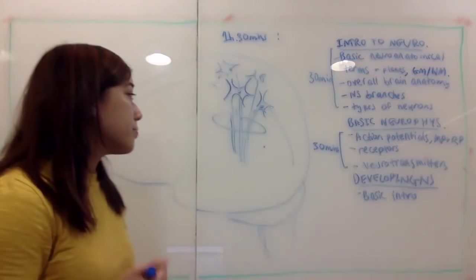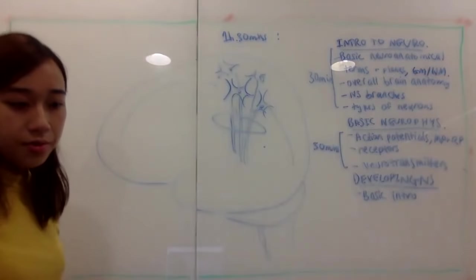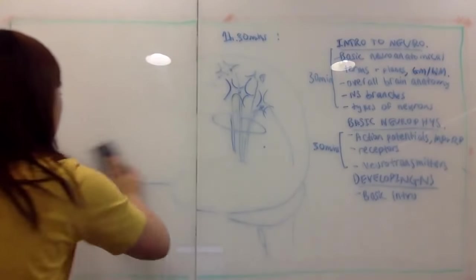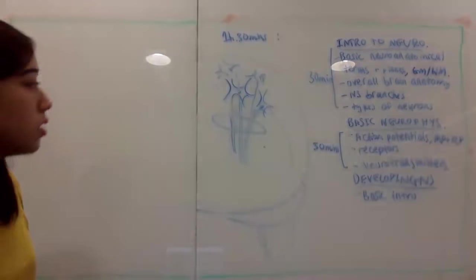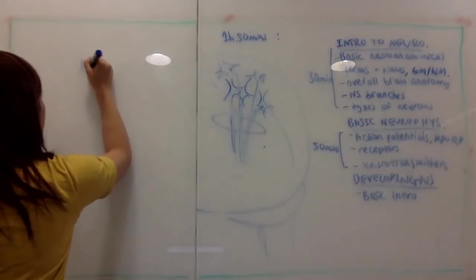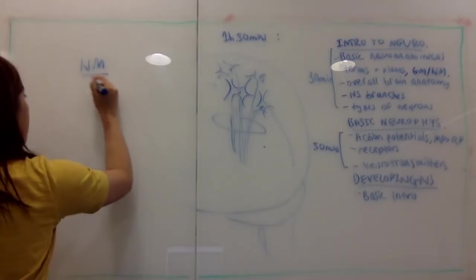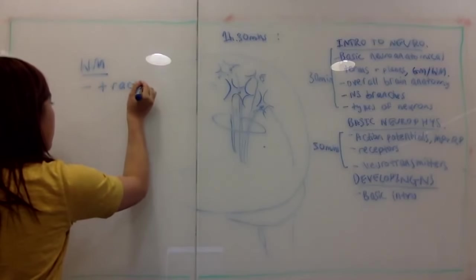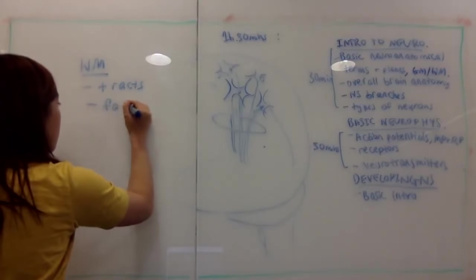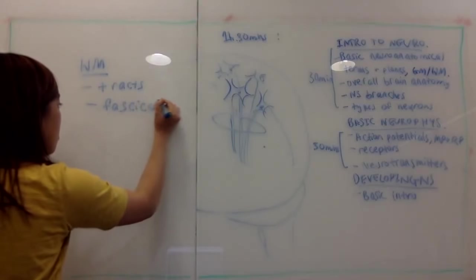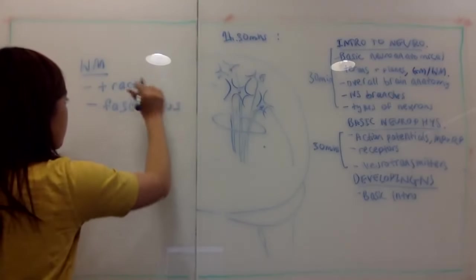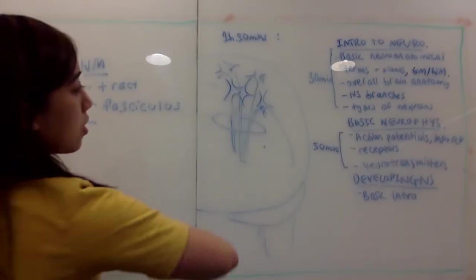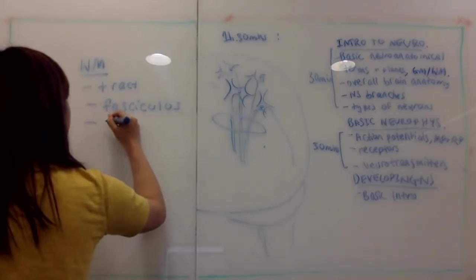For white matter, there are some terms you'll probably see associated with it: tracts, fasciculi (or fasciculus), commissures, and decussations. One famous white matter tract is the corpus callosum — the one that wraps around the center of the brain, connecting both hemispheres together for communication.